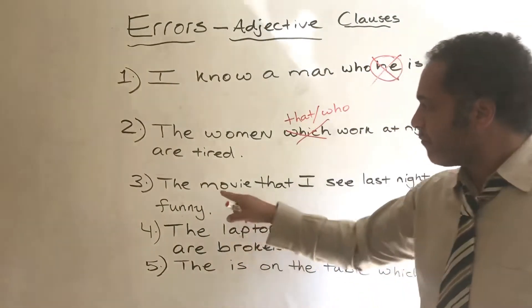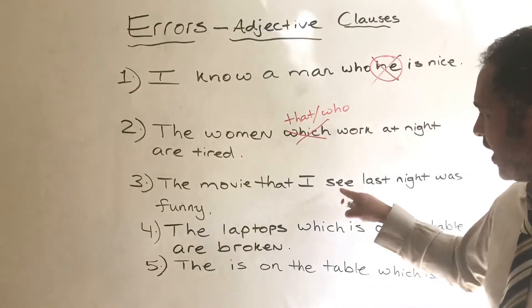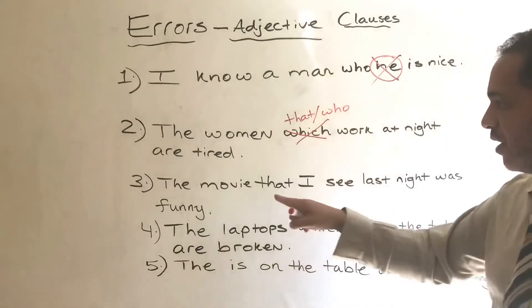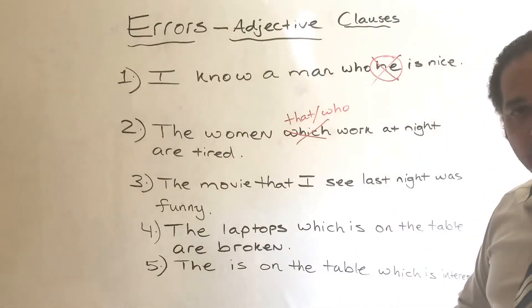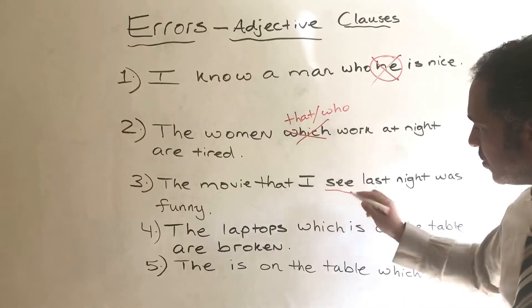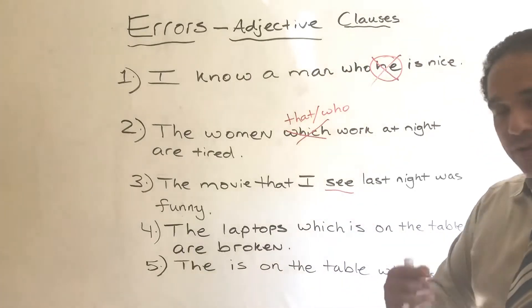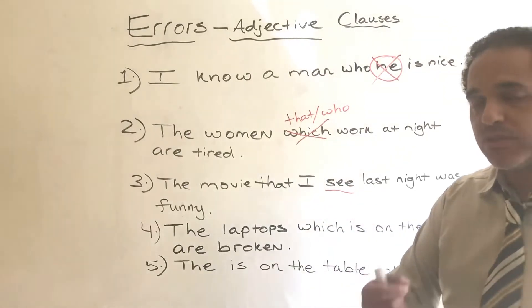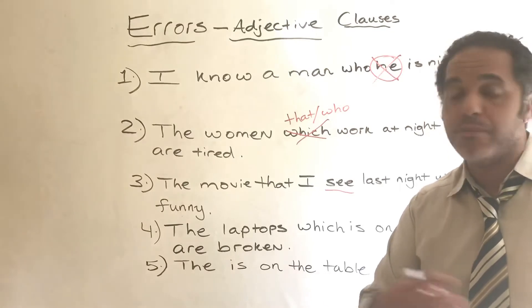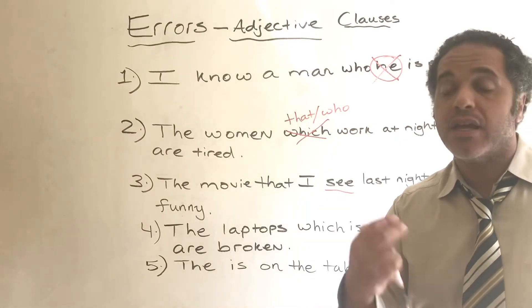Number three: 'The movie that I see last night was funny.' The mistake here is this verb. Remember, the verb tense inside the adjective clause can be anything — it can be present, it can be past,